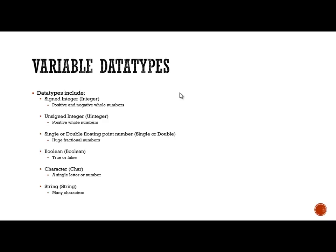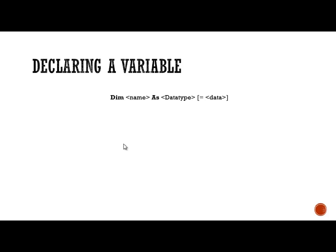One thing to note: a character can be a number, but to a computer, if you're storing 9 as a character, it doesn't look at that 9 as the number 9 — it looks at it as the character 9. So we can't do any maths with a character. The only things we can do maths with are integers or single/double floating point numbers.